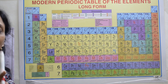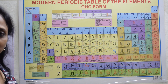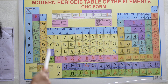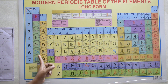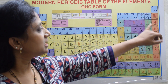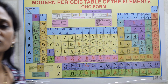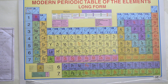Whenever writing about the periodic table, write the year discovered, who discovered it, the definition, the assumptions, and importantly the limitations. The most important limitation is the position of hydrogen, because hydrogen resembles Group 1 as well as Group 17 (halogens), and this could not be clearly explained.